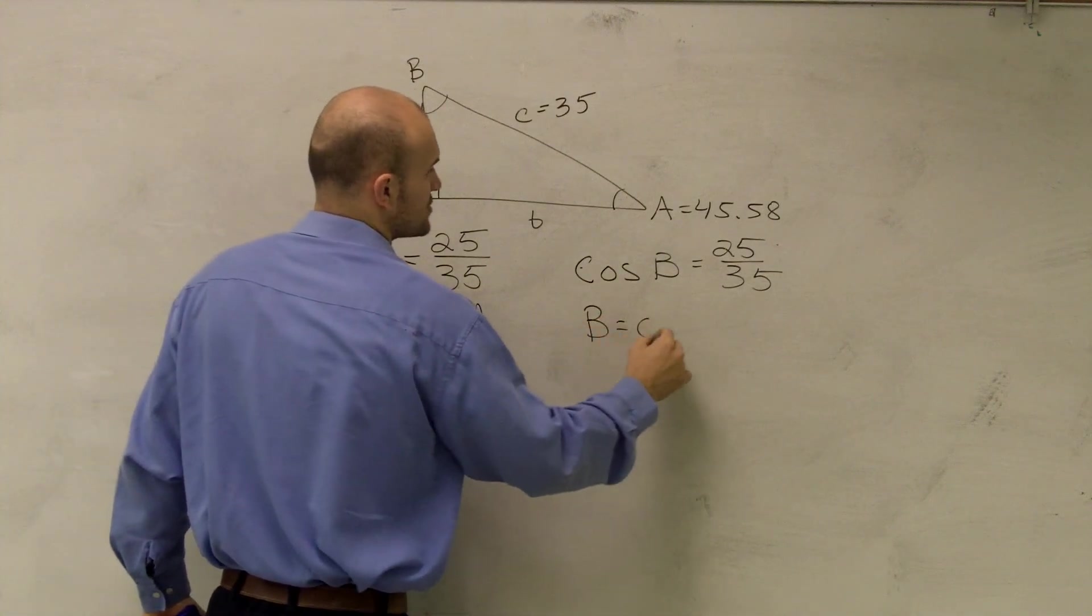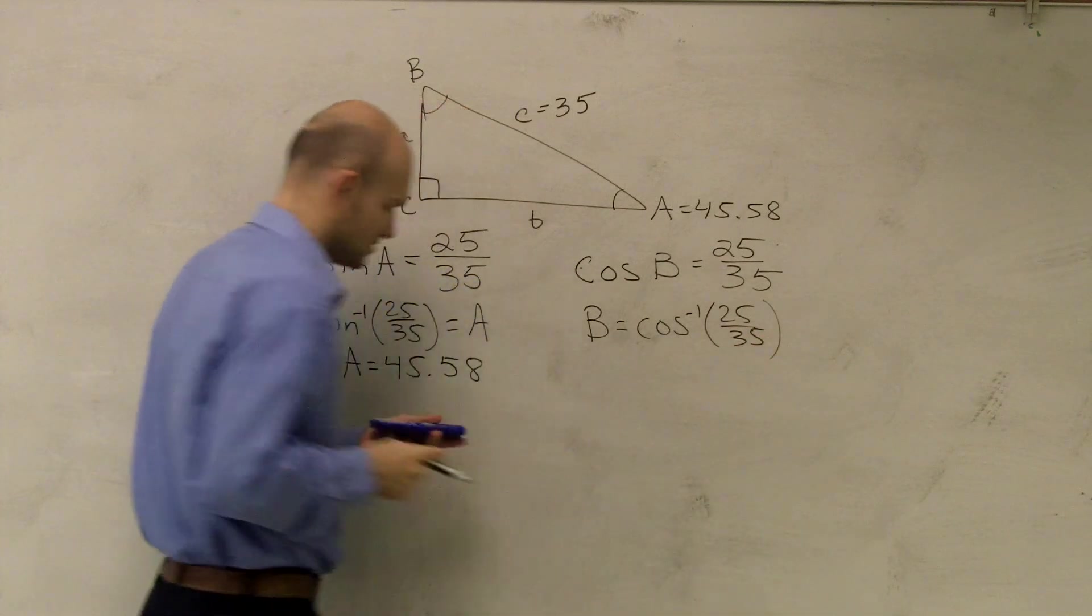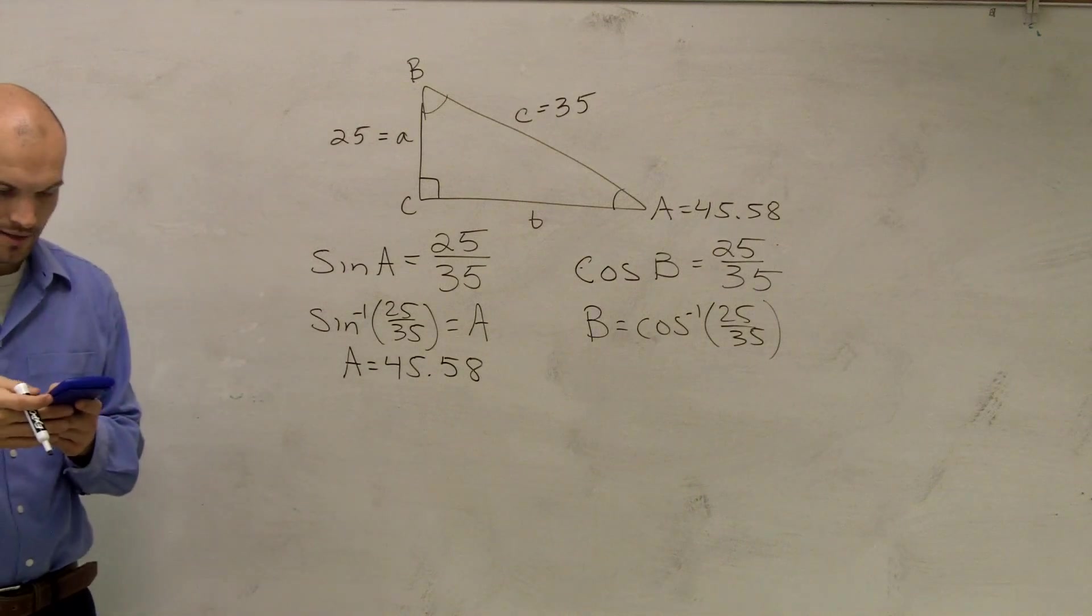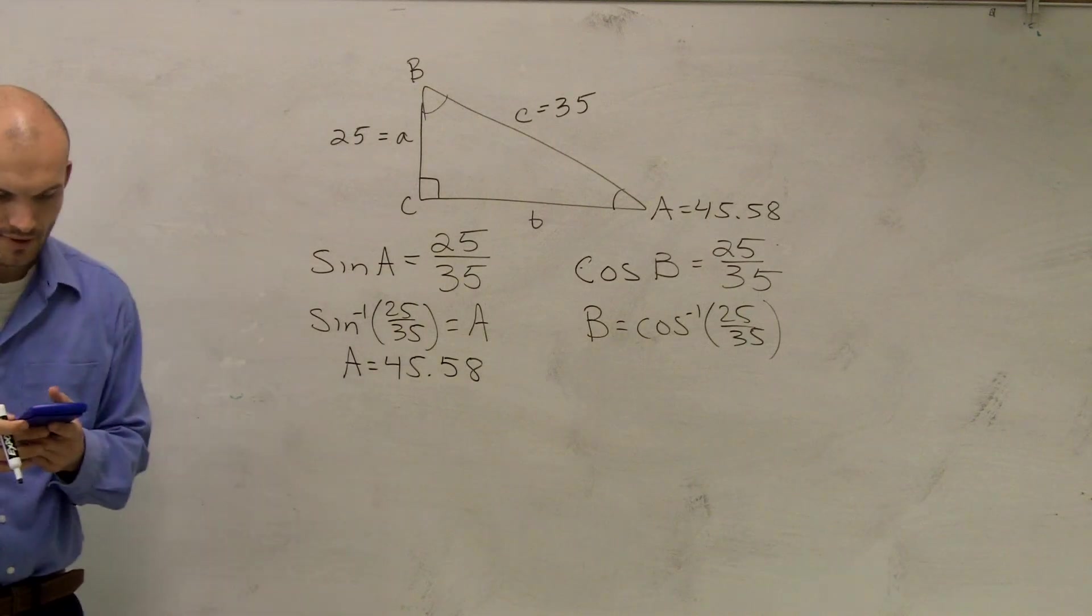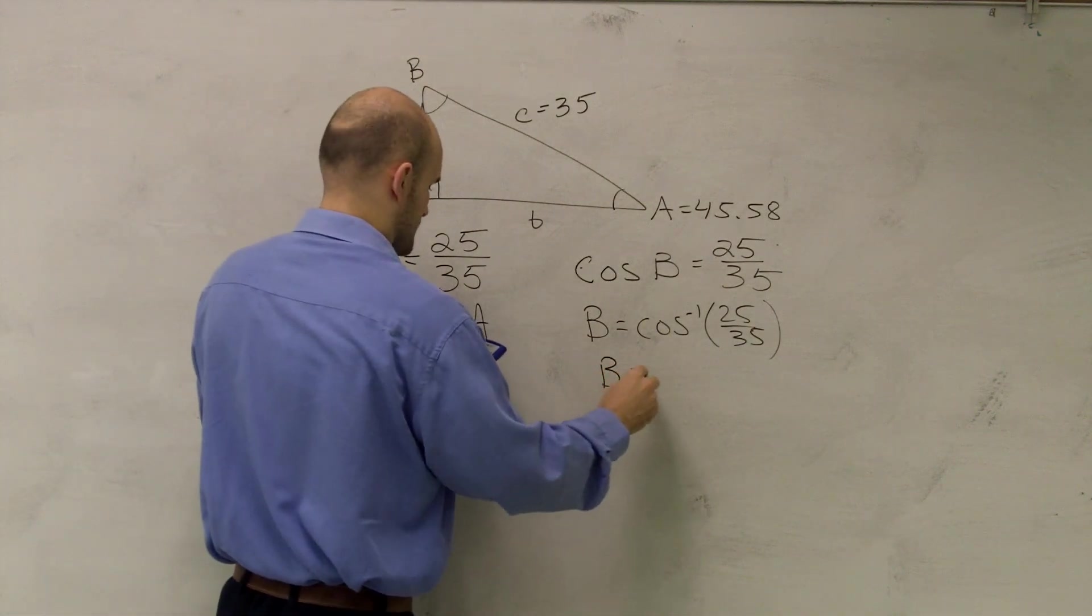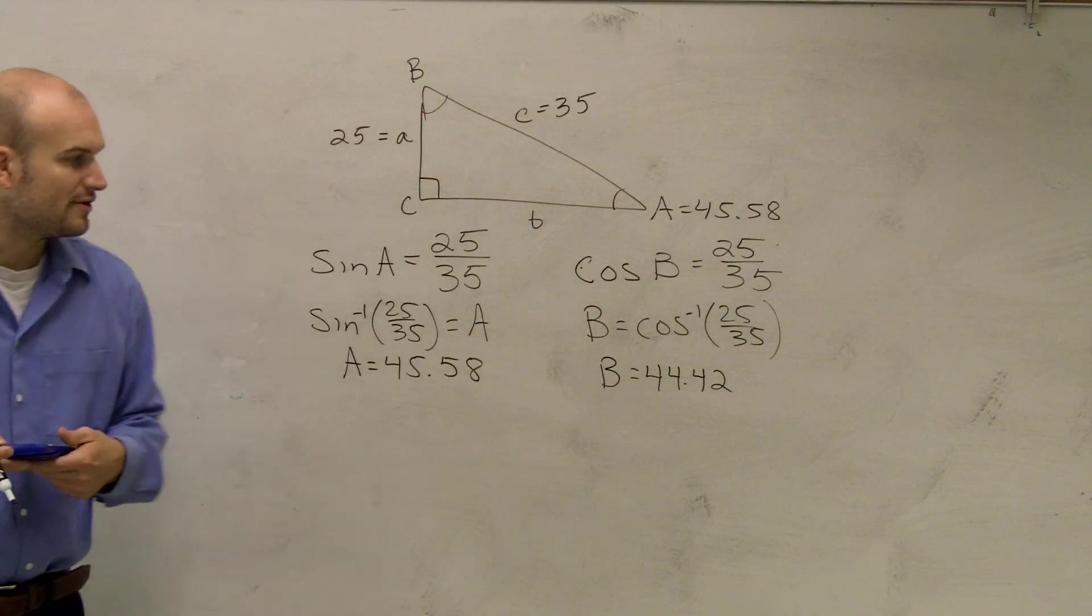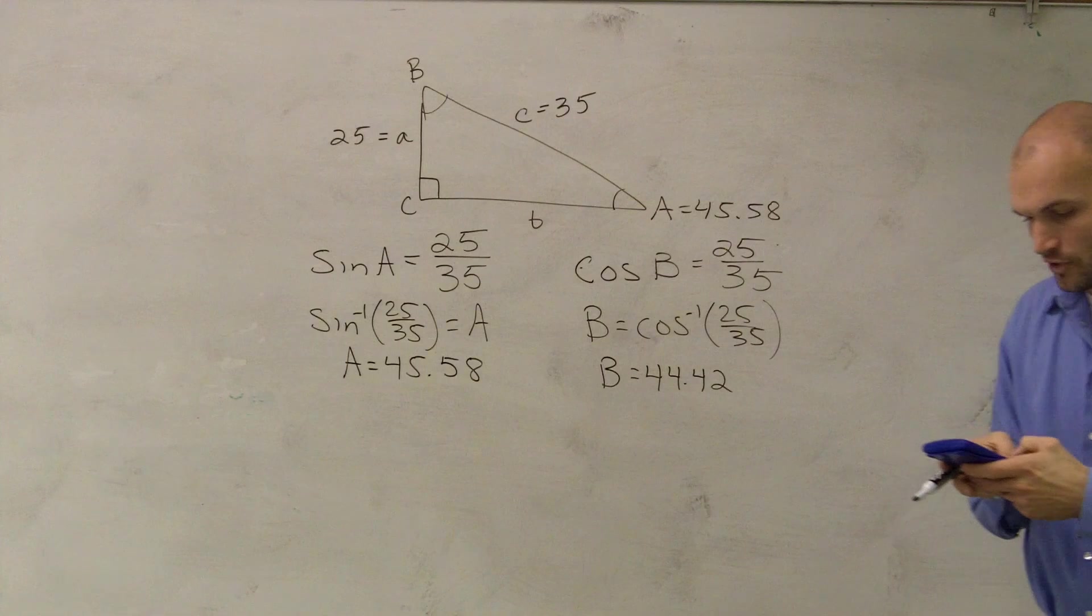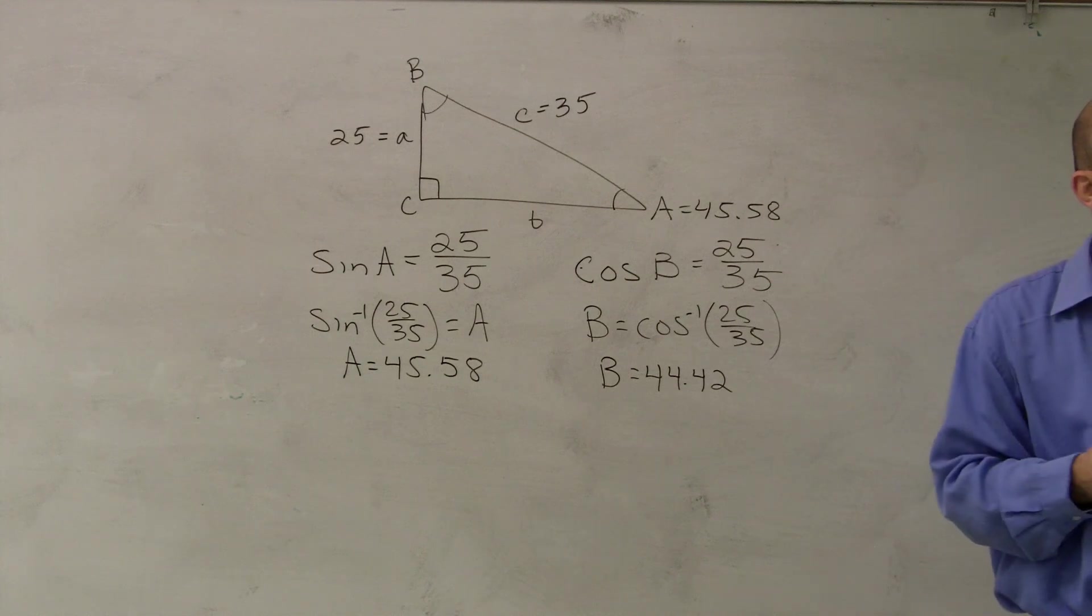So therefore, B equals inverse cosine of 25 over 35. Now let's just go ahead and check our work here. Make sure that, even though you could use Pythagorean theorem if you wanted to, or all the angles in a triangle added to 180, what I get is 44.42. So just for fun here, if I add up 44.42 plus 45.58 plus 90 degrees, I should get 180 degrees. And that's exactly what I do.